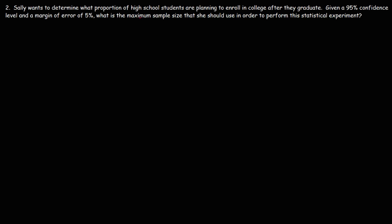So keep in mind we want to calculate the maximum sample size. The formula that we could use to calculate the sample size given a proportion, which is different from the last problem, is n is equal to z squared times p̂ multiplied by 1 minus p̂ divided by the square of the margin of error.